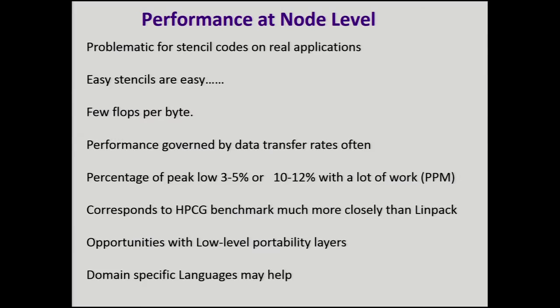Node-level performance for real applications is hard. There's a lot of work in computer science on easy stencils. There are relatively few flops per byte, so this is a problem. Our percentage of peak is really low — 3% to 5% is good for all the reasons in Jack Dongara's talk. If you work really hard, 10% to 12% — the PPM code by Paul Woodward does that. So this is much closer to the HPC benchmark than to LINPACK. We have to do something about this — low-level portability layers and domain-specific languages are going to help.